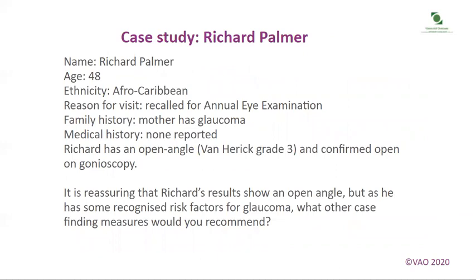A case study: Richard Palmer, who is 48 and Afro-Caribbean, has come for his annual eye examination. His mother has glaucoma. He has no reported medical history. He has an open angle by Van Herrick's technique, graded as 3, and confirmed open on gonioscopy. It is reassuring that Richard's results show an open angle, but as he has some recognised risk factors for glaucoma, what other case-finding measures would you recommend?